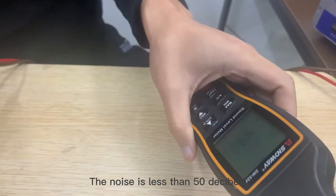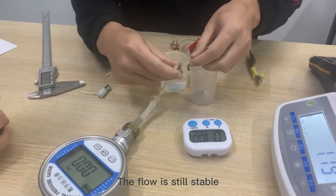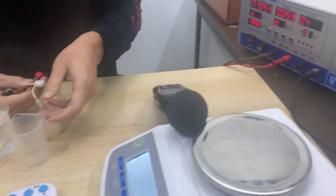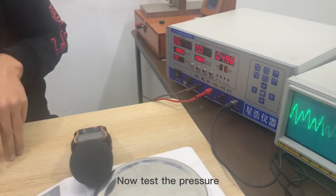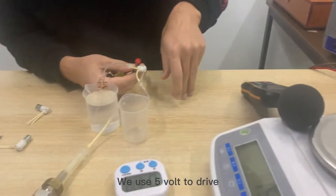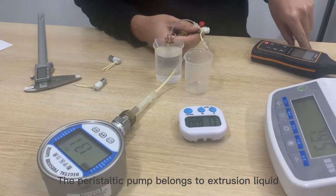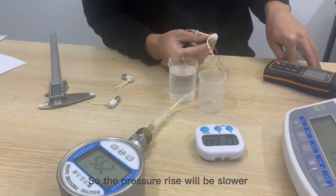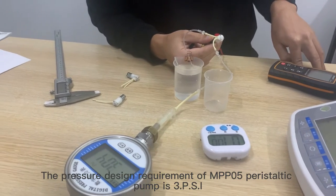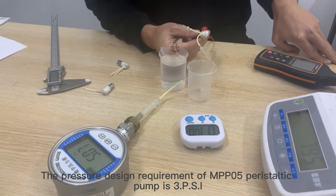Now test the pressure. We use 5V to drive. Peristaltic pump belongs to extrusion liquid, so the pressure is rising slowly. Water pressure standard for MPP05 is over 3 pounds per square inch. The actual pressure test is more than 5 pounds per square inch.